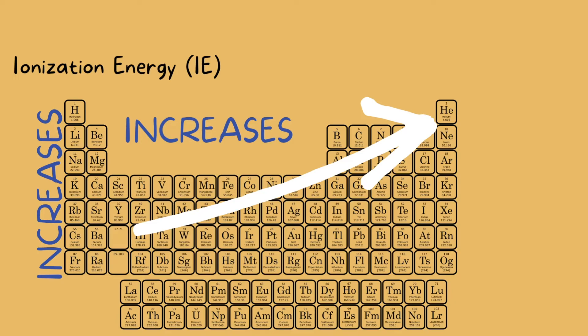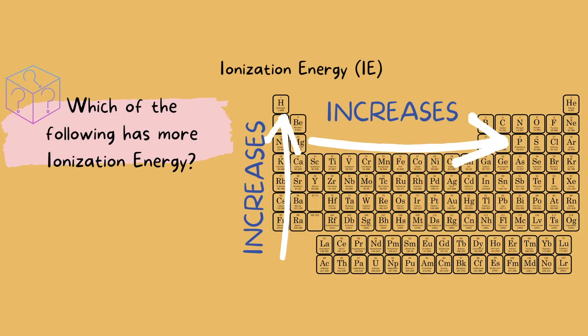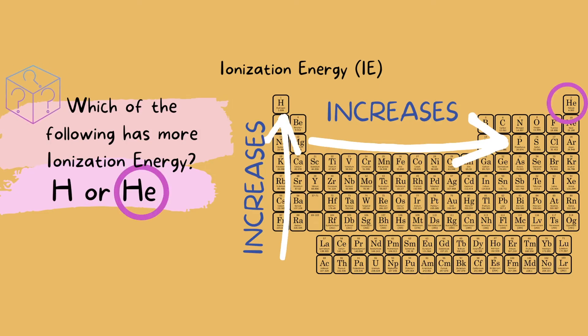Let's look at an example. Which of the following has more ionization energy: hydrogen or helium? By relying on the periodic table, we can see helium is further to the upper right. Therefore, it has more ionization energy.